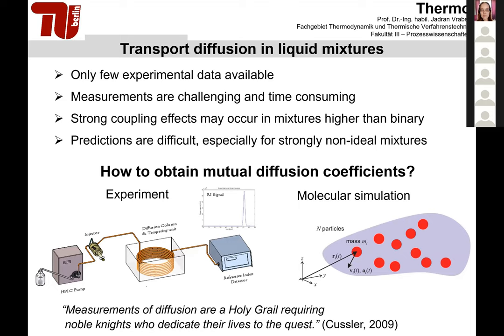Diffusion has been known for almost 170 years, so the question is: why is the data situation so poor? The answer is that measurements are really challenging and time-consuming. Another problem is that strong coupling effects may occur in mixtures with three or more components: diffusion of a single component depends very much on the behavior of the other components and not only on its own driving force gradient. In the gas phase prediction may be possible to some extent, but for strongly non-ideal liquid mixtures, predictions are really challenging.